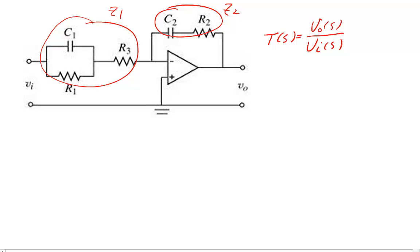The transfer function should be minus Z2 over Z1. Z2 is the equivalent impedance for two impedances in series, so that's 1/(C2*s) + R2.